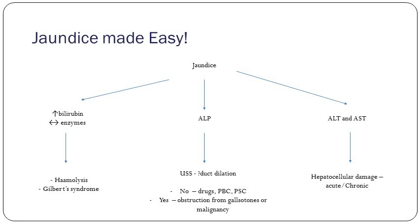If the bilirubin is high and your LFTs are within normal range, the cause of jaundice is pre-hepatic — consider hemolysis and Gilbert's syndrome. If the patient has a high bilirubin and their ALP is up, the cause is post-hepatic — do an ultrasound, see if there's any duct dilation. If there is, it's obstruction from either a gallstone or malignancy. If the ducts are normal size, consider drugs, PBC, or PSC. If you've got a raised ALT and AST, the cause is intra-hepatic — hepatocellular damage, usually more of a chronic cause.